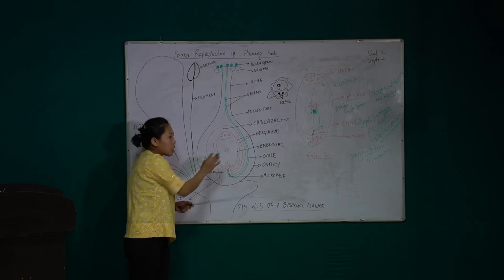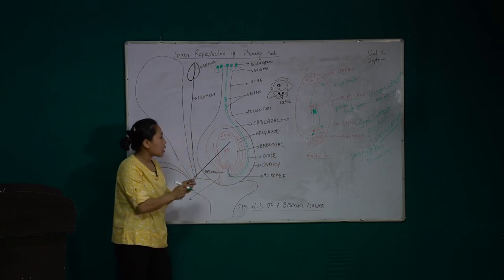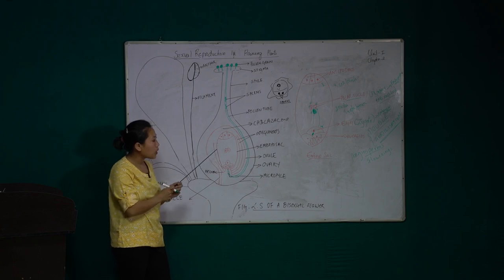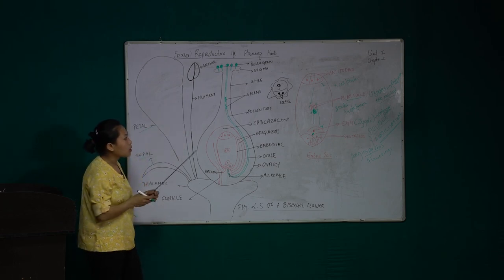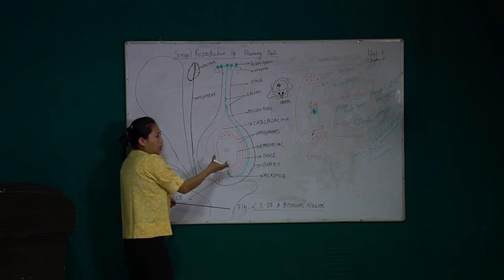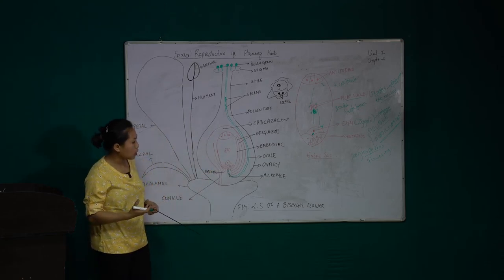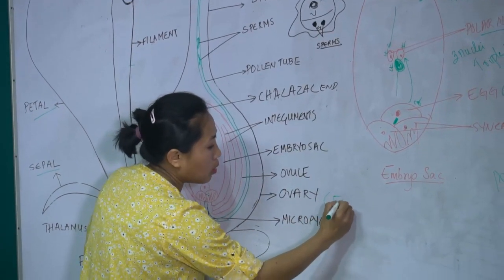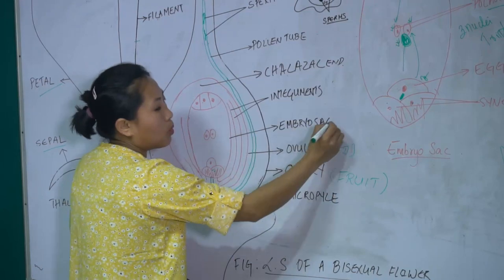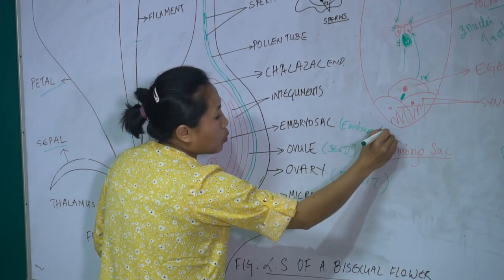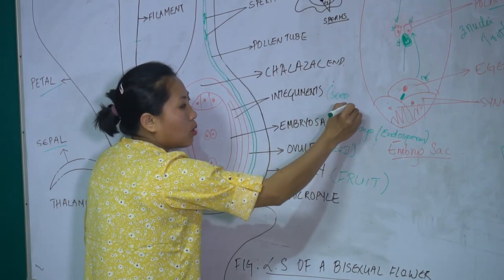As these developments — triple fusion, double fertilization — take place inside the flower, the other parts like the petal, sepal, and anther wither and fall off, leaving only the pistil. The ovary undergoes hormonal and various other changes, and the ovary develops into the fruit of the plant. The ovule develops into the seed, which encloses the embryo and endosperm, while the integument forms the seed coat.